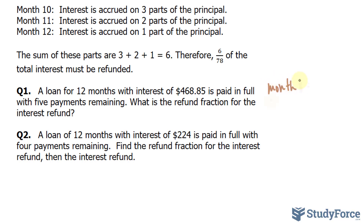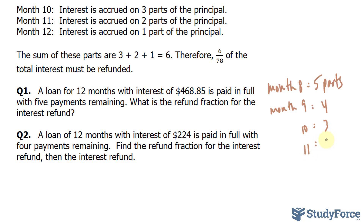Month 8 would be 5 parts, month 9 would be 4, month 10 would be 3, month 11 would be 2, and month 12 would be 1. Adding these up — 5 plus 4 plus 3 plus 2 plus 1 — that's 15. So that's 15 out of the 78 parts. A subsequent step would be to apply this fraction to the interest to calculate the interest refund.